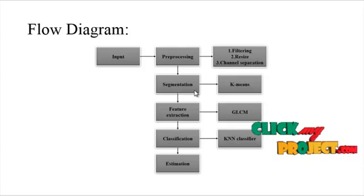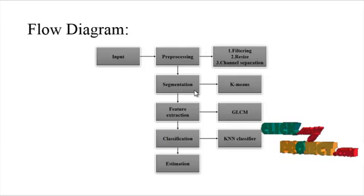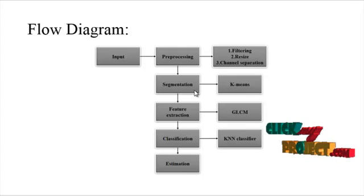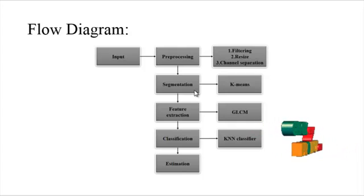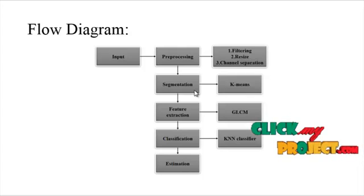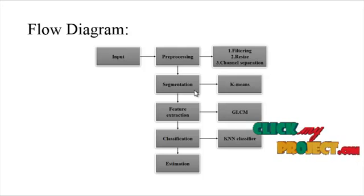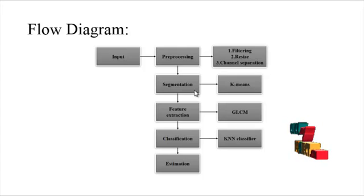In the segmentation process, k-means clustering is applied to segment the fruit image for classification. Features are then extracted from the segmented images using GLCM — Gray Level Co-occurrence Matrix. In the classification step, either a k-means classifier or a neural network classifier is applied to identify the fruit.